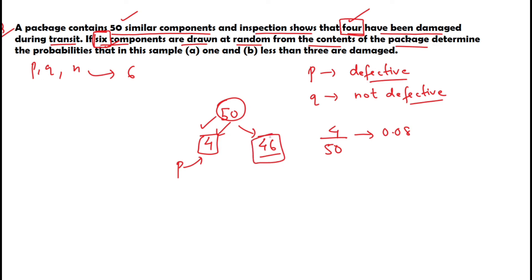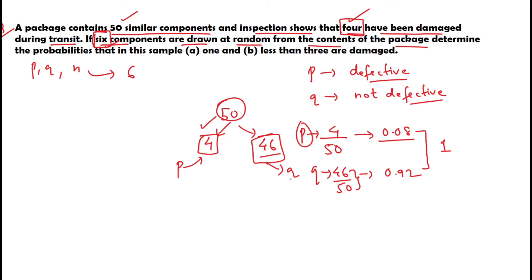Q is 46/50, which gives 0.92. Notice that P plus Q equals unity. Alternatively, if you already have P = 0.08, then Q = 1 minus P = 1 minus 0.08 = 0.92. This is one more method to identify Q without dividing.